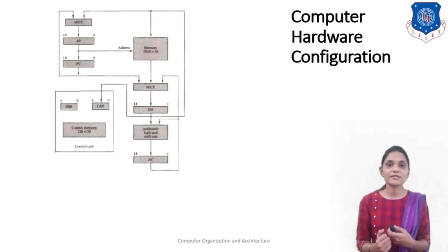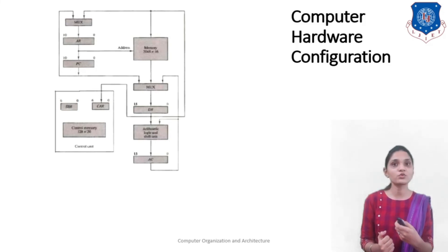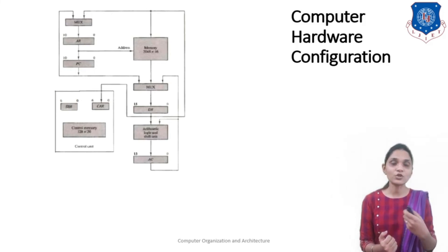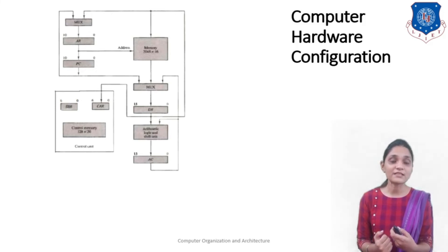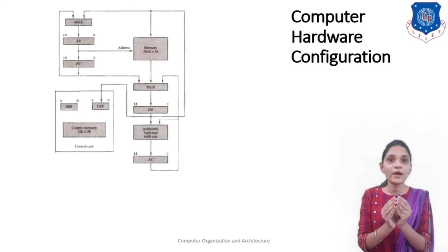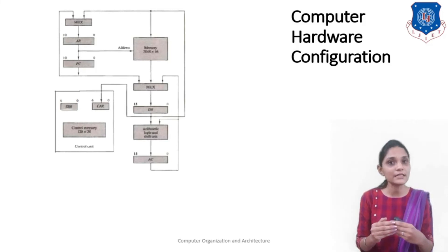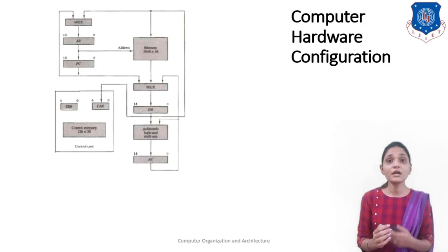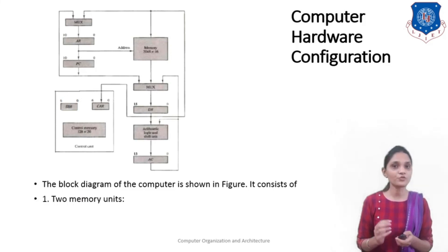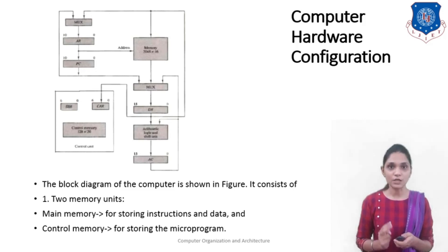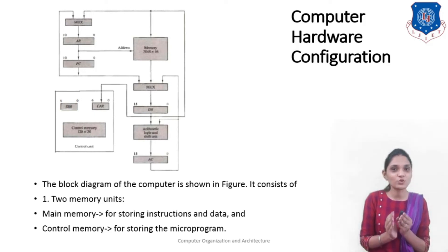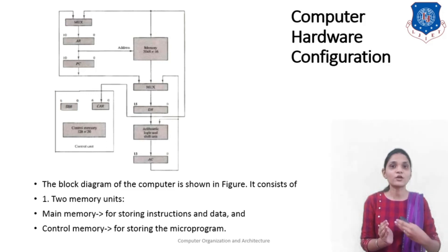The multiplexer, address register, and program counter work together: the program counter stores the next location from which the instruction will be fetched, and the address comes from the multiplexer, which combines memory locations, the program counter, and accumulator contents to determine the actual address. Data is then accessed and stored in the data register, an operation is performed in the ALU, and the result is output. The block diagram shows two memories: main memory for instructions and data, and control memory for micro programs.